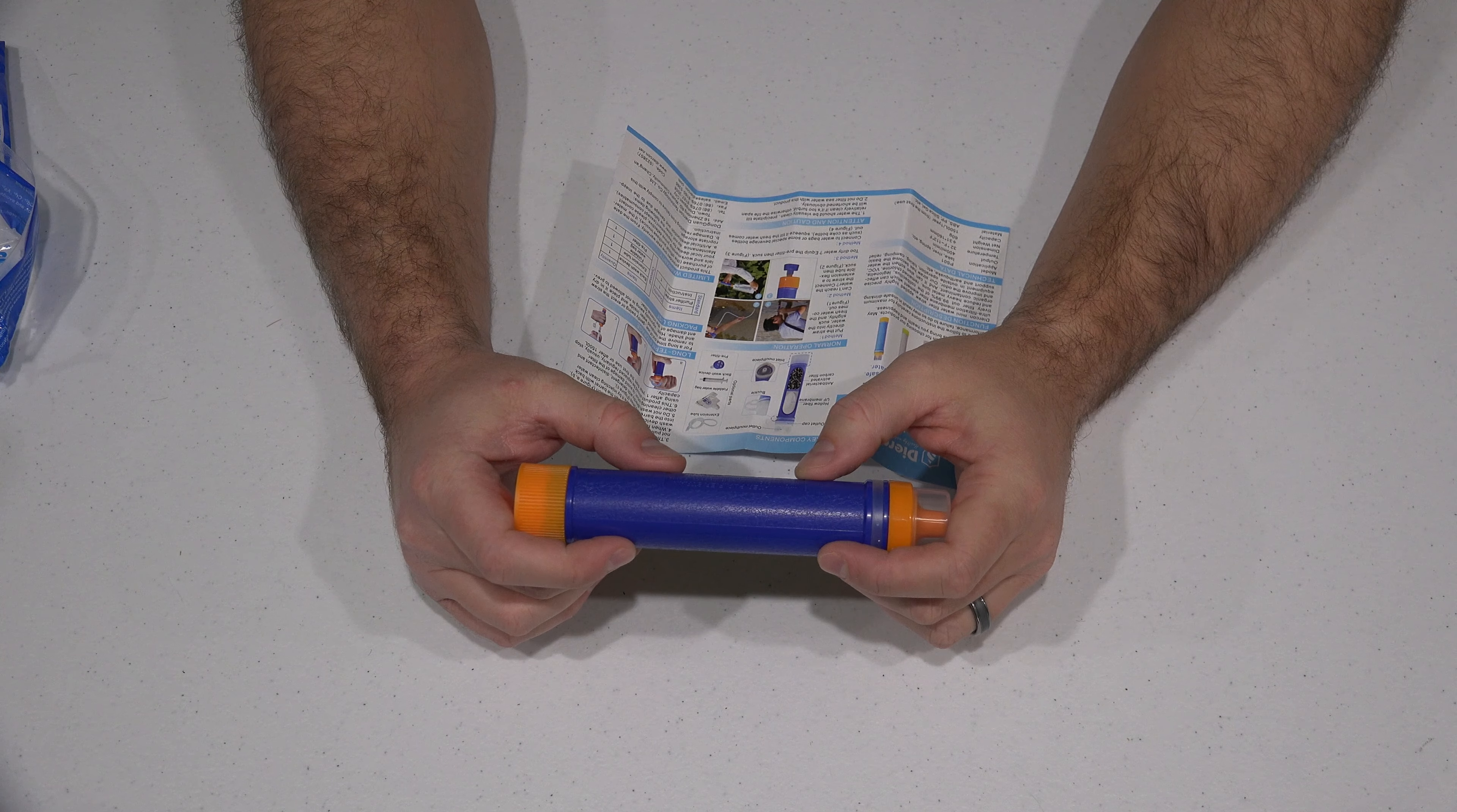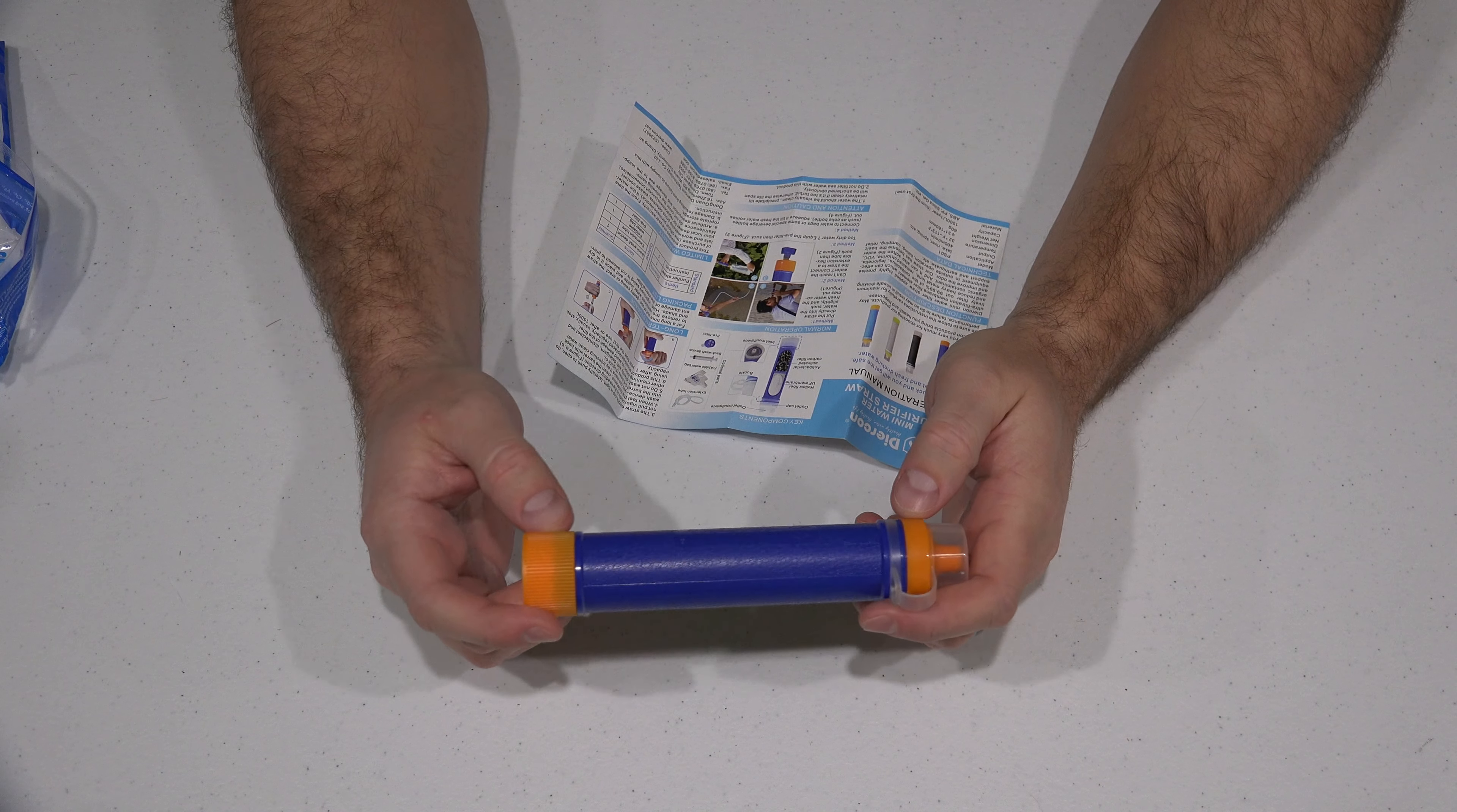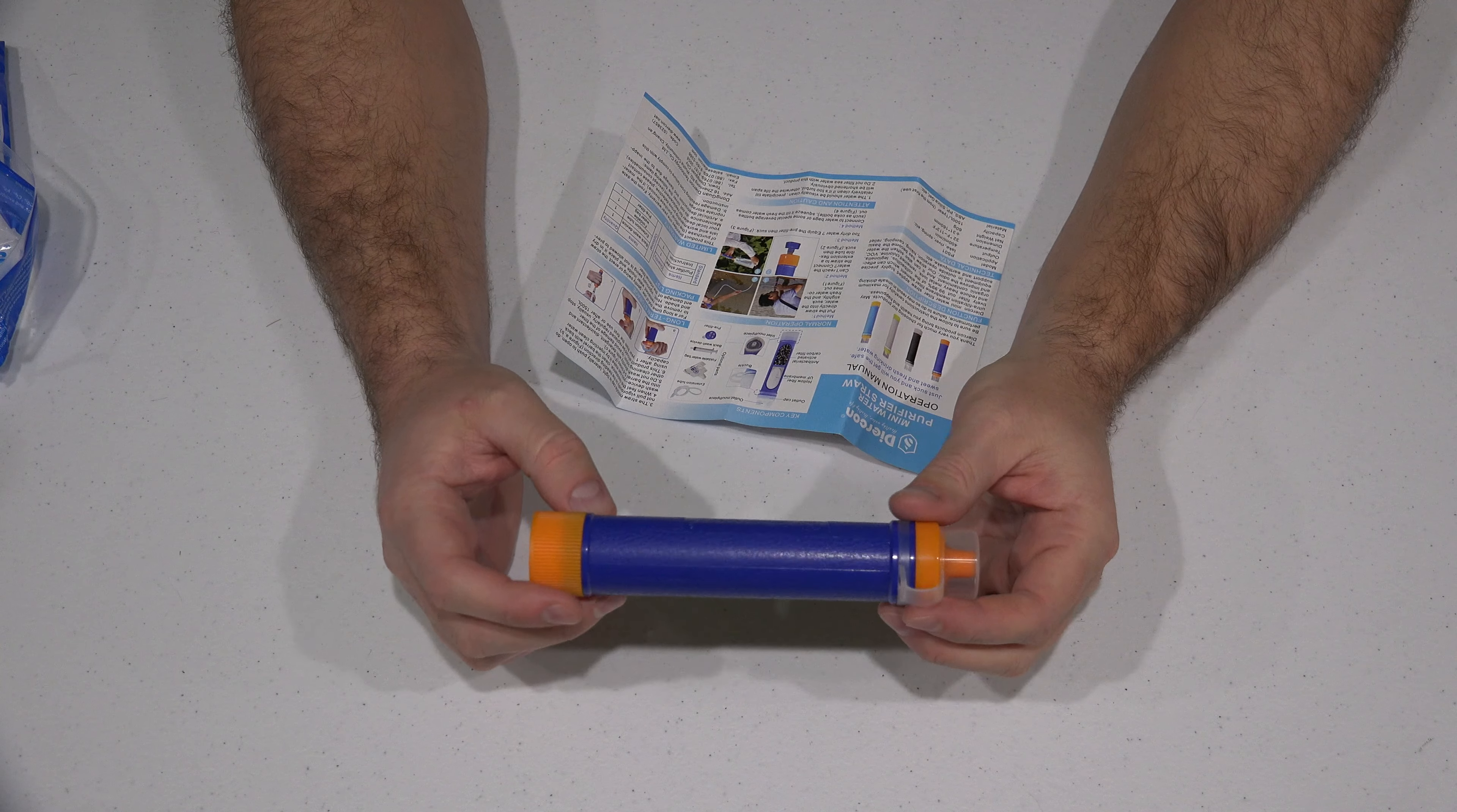And it does have a disclaimer on the side. It says warning: do not filtrate the serious contaminated dirty water with the purifier. So obviously if you're looking for water to drink, any water that's stagnant, that tends to be more dangerous. But ultimately in a perfect world, what you would want to do if you could would be to boil the water first, and then after boiling the water.